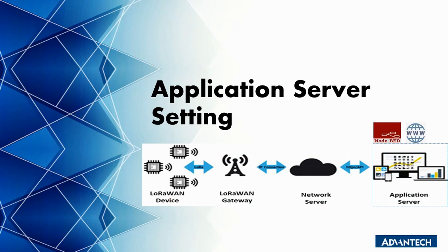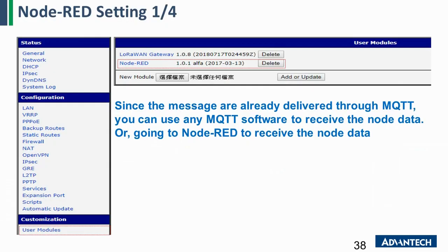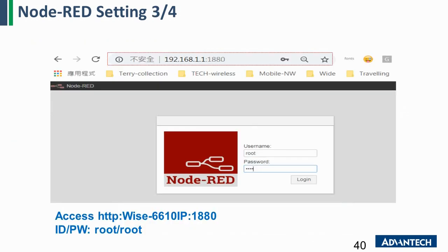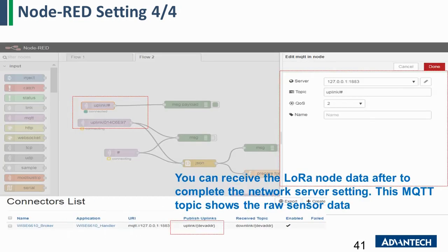The last part is the application server setting. Now that we have processed the data, we want to display it in an application. If you don't have any software, you can use the Node-RED function on our LoRaWAN gateway. Enable the Node-RED function, go to the Node-RED page, create a data flow, and subscribe to the topic you configured in the network server page to receive the data. This is a basic way to display the current data received from the LoRaWAN node.